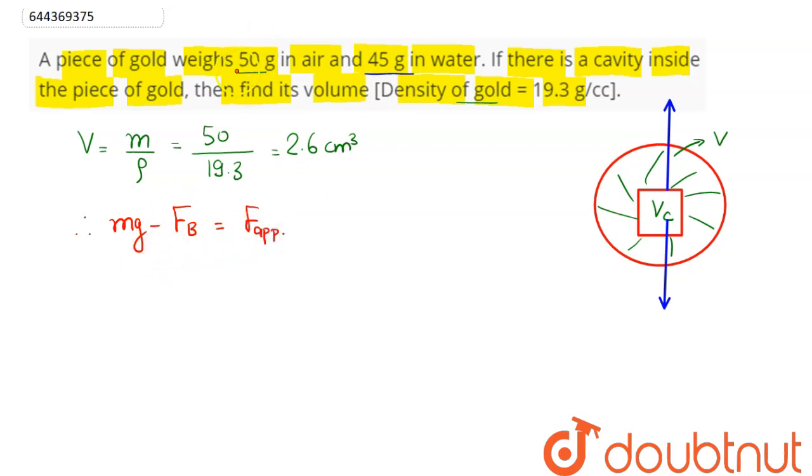Next, buoyancy force will be equal to density of water into total volume, which is volume of gold plus volume of the cavity, into g. This equals the difference in weights. Now g cancels out, so this becomes 50 minus 45 equals 5, which equals rho w into V plus Vc.